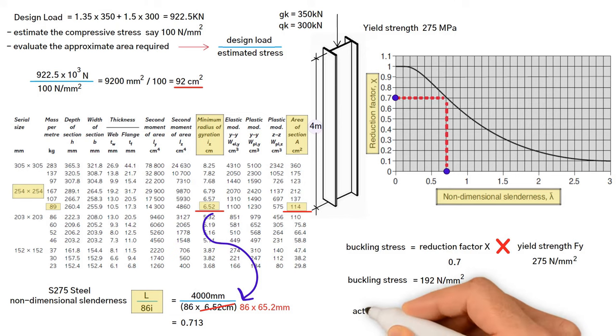Finally, we need to work out the actual stress which equals design load 922.5 times 10 to the 3, divided by area section 114 centimetres squared, divided by 100 to convert it to millimetre. This gives us 81 newton per millimetre squared.